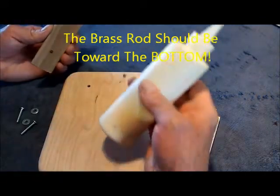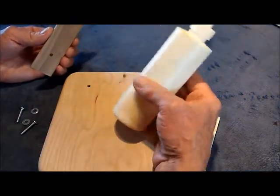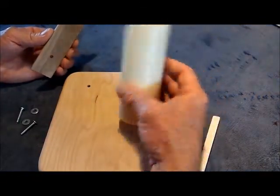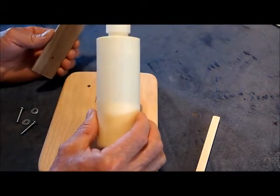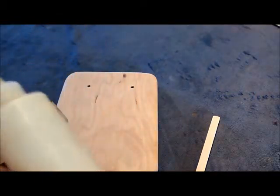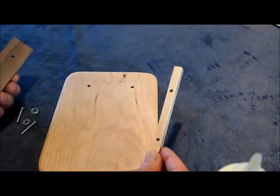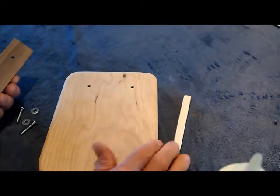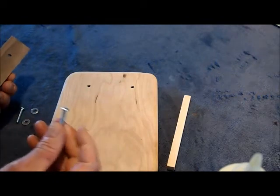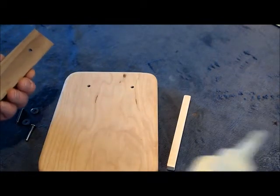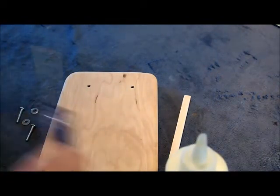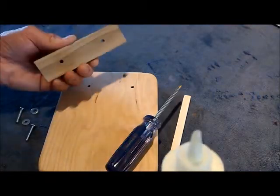Then we're going to use some Elmer's yellow glue or Titebond or whatever brand you can find. It's the yellowish kind of glue. We want to make sure we have this clamping bridge clamp ready, and then these screws and washers, and a screwdriver, of course.